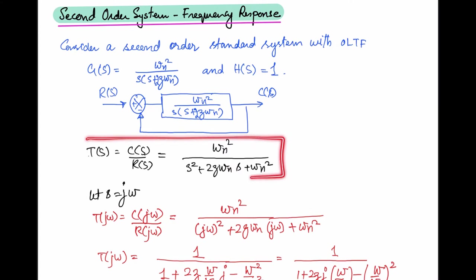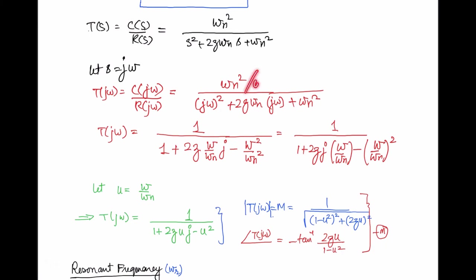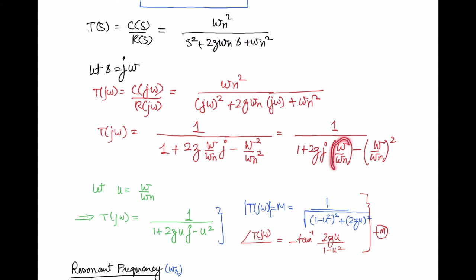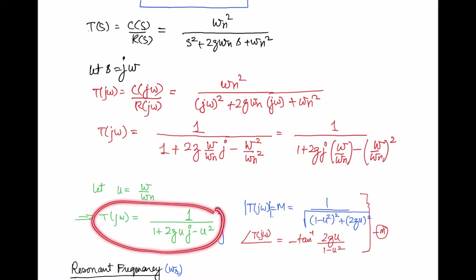The closed loop transfer function is given by the standard equation. By taking s = jω we can determine the sinusoidal transfer function, where s is replaced with jω. Dividing numerator and denominator by ωn squared, and letting u = ω/ωn, this transfer function can be written as 1 divided by (1 + 2ζuj - u²).